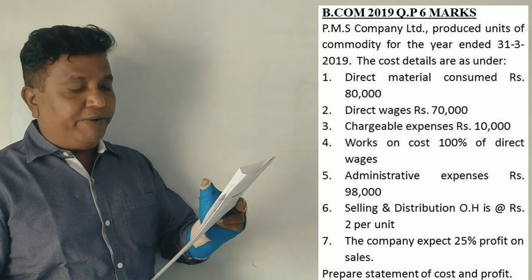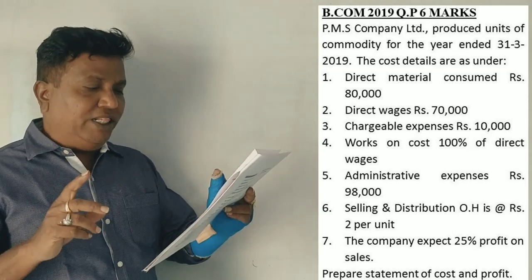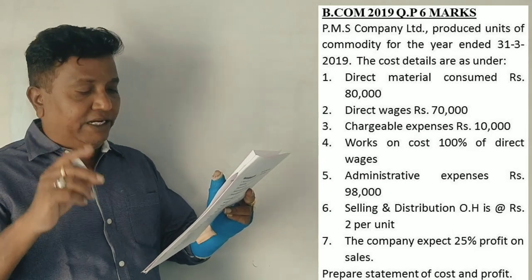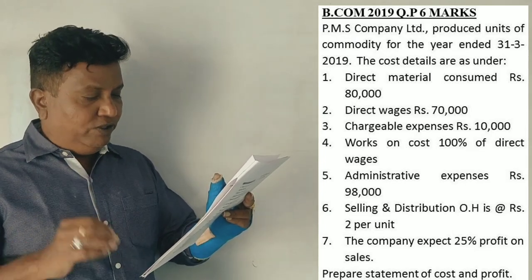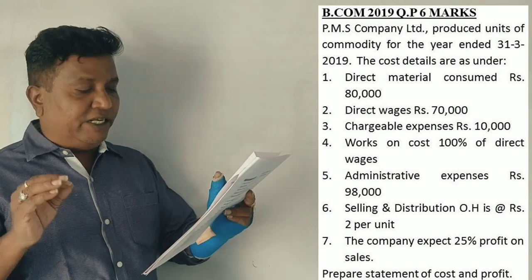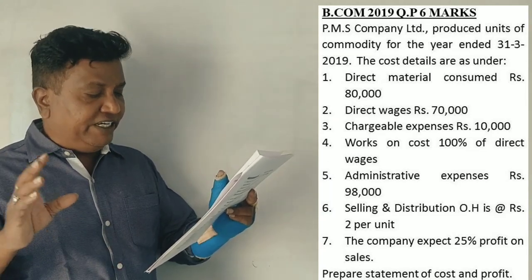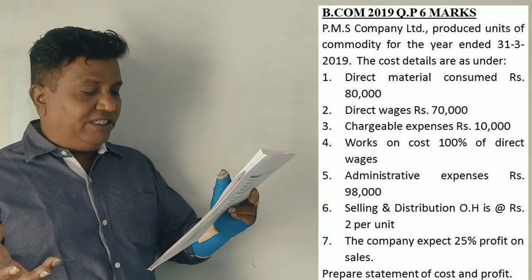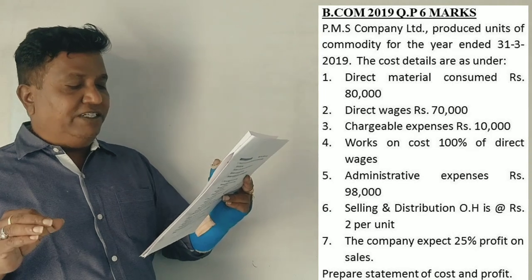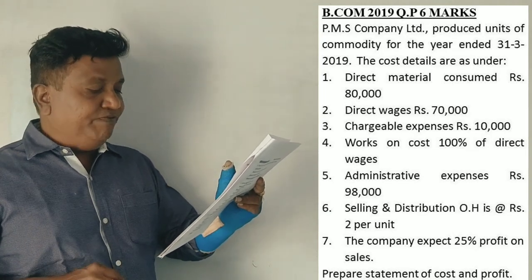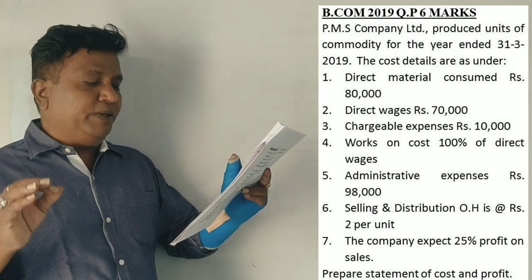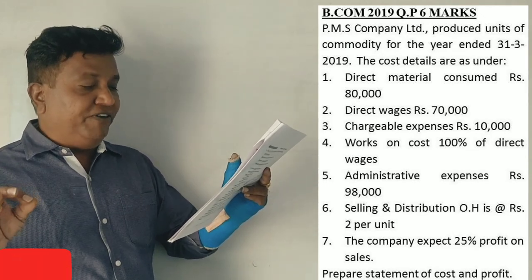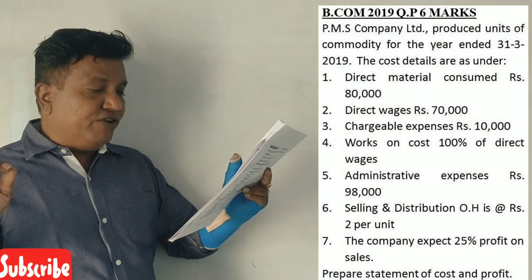PMS Company Limited produces 1000 units of commodity for the year ended 31st March 2019. The cost details are as follows: Direct materials consumed Rs. 80,000, Direct wages Rs. 70,000, Chargeable expenses Rs. 10,000, Works on cost 100% of direct wages, Administrative expenses Rs. 98,000, Selling and distribution overhead is at Rs. 2 per unit. The company expects 25% profit on sales. Prepare a statement of cost.